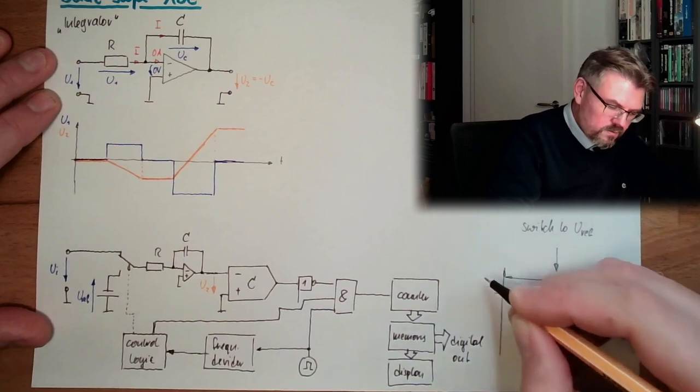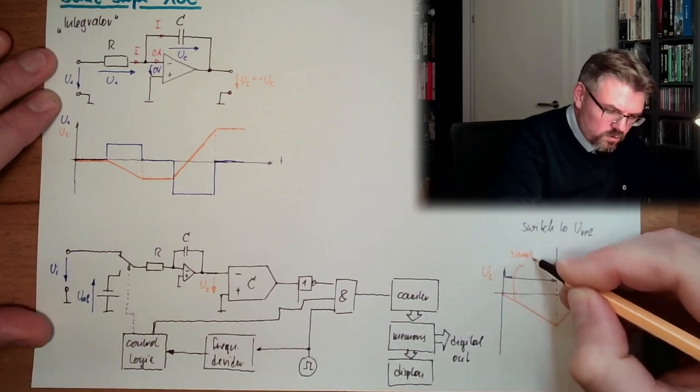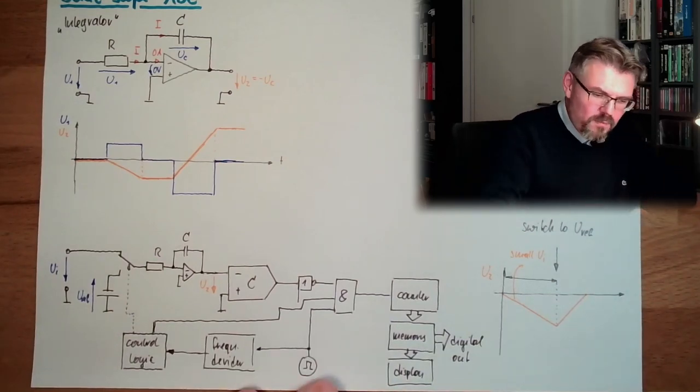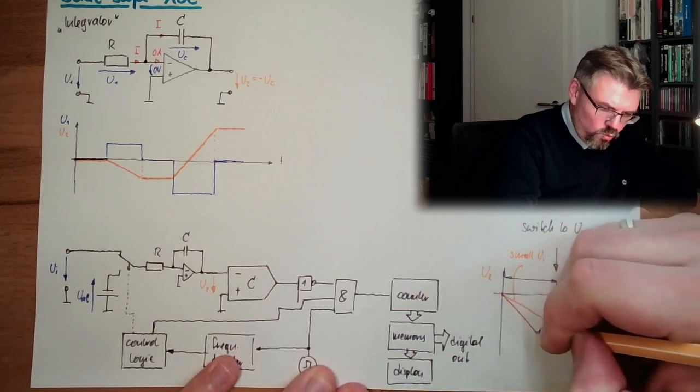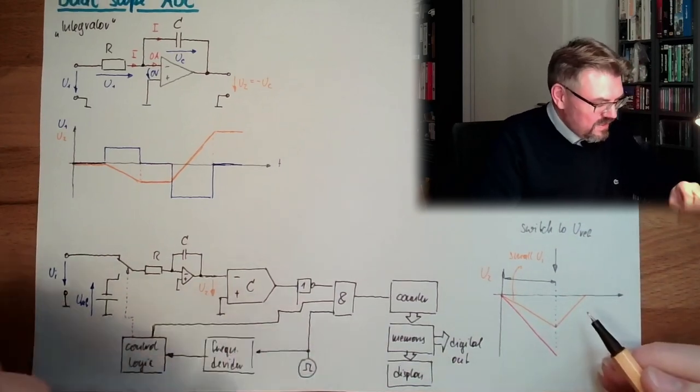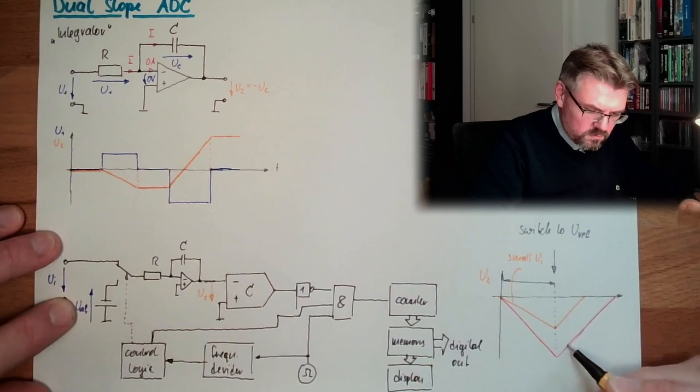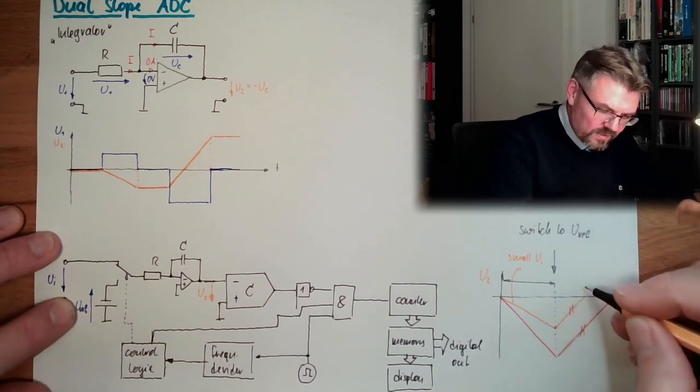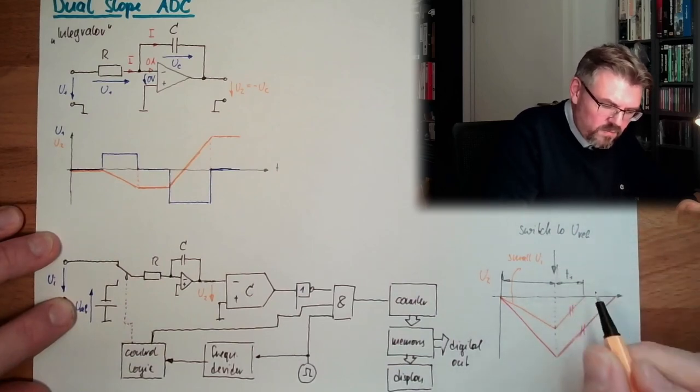This is small UI, this is U2. If we have a big UI, it would look like that, that a big UI will cause a steeper ramp here. In the same amount of time this will simply be charged more. And then since the reference voltage stays the same, we will go in parallel up. Those two things are parallel. Why? Because reference voltage is the same. And look at that, suddenly we have here a time T1, and we have here a time T2.